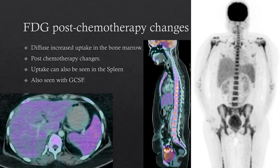FDG uptake can also be seen with post-chemotherapy changes. It is typically diffuse and more prominent than hepatic activity. It can be seen in the bone marrow and the spleen, and can occur with chemotherapy and with G-CSF.